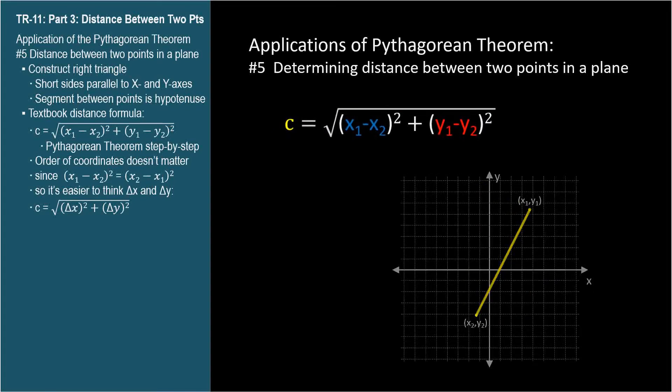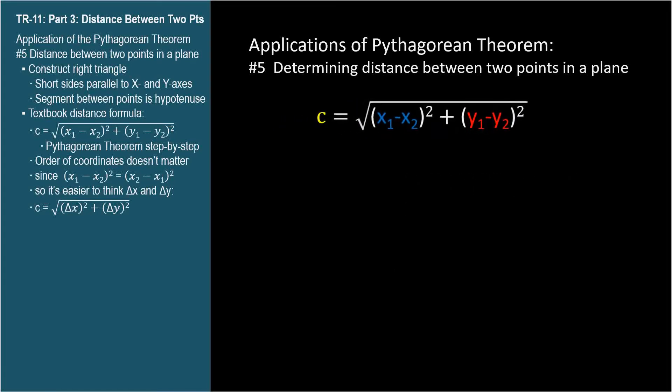These subscripts might be hard to keep straight. Is it x1 minus x2, or x2 minus x1? And is the order for the y variables the same as for x? I've got a little secret: you don't have to remember.